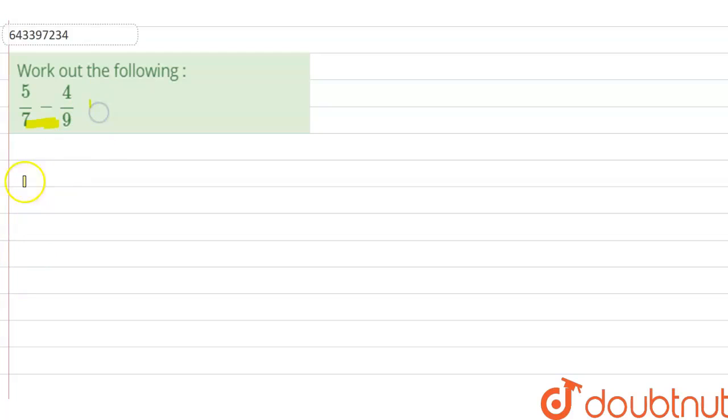So come here now to solve this question. First of all, we will write down this 5 by 7. Just check question number. We can support that like 5 by 7 minus 4 by 9. Now, what we will do first of all, we will take the LCM of both 7 and 9.